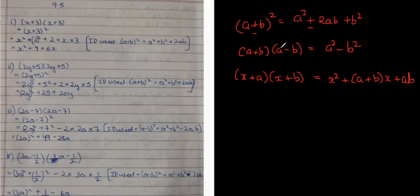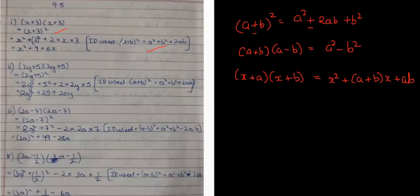We will be using among these four identities. First of all, you have to write the expression in identity form. As you can see in the first question, x+3 times x+3 is (x+3) whole square. So write the identity used — very good. You have to write the identity.